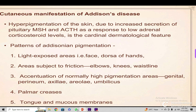In adrenal insufficiency, because the gland is not functioning, the pituitary will act through ACTH. ACTH is very similar in structure to melanocyte-stimulating hormone. That is why there is hyperpigmentation of the skin, hyperpigmentation of the palate, under the tongue, and the palmar creases will be increased. These are very important findings if you want to check hyperpigmentation.